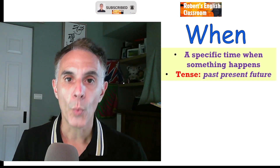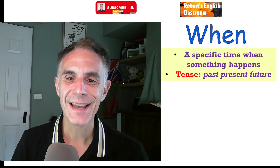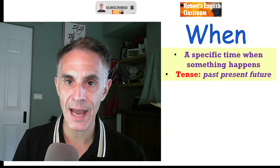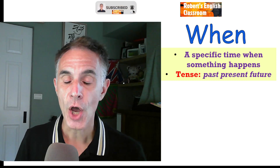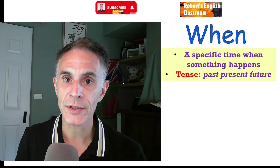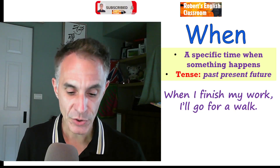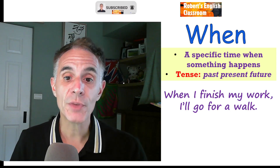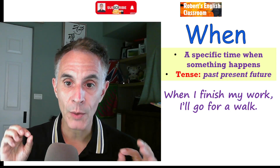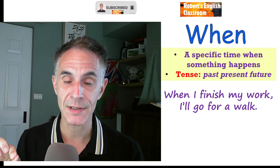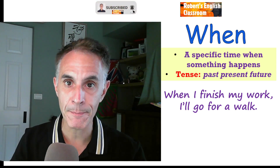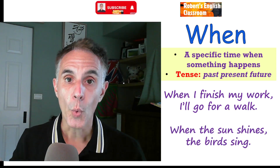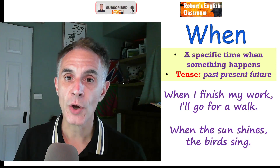Our first word is 'when.' We use 'when' at a specific time when something happens. We can use the past, present, and future tense. 'When' is probably the easiest of these five. For example: 'When I finish my work, I'll go for a walk.' The time is when I finish the work — at that time I go for a walk. Another example: 'When the sun shines, the birds sing.'